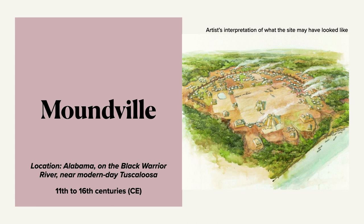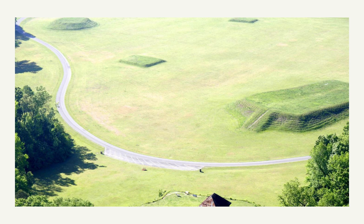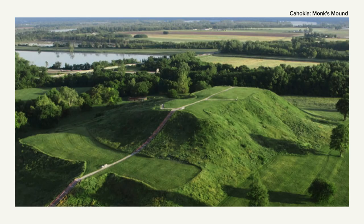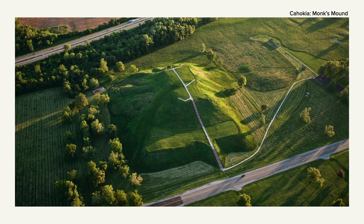We have an artist's depiction of what Moundville might have looked like, and here's what you can actually see there today — it's pretty well organized, and clearly there was a thought process into how things were laid out. Another famous site is Cahokia in Illinois near present-day St. Louis, right alongside the Mississippi River, dating back to the 13th century. Here's an artist's interpretation of what it might have looked like, and here's part of what remains — what they call Monk's Mound. It's really quite beautiful.